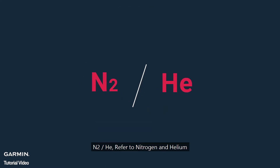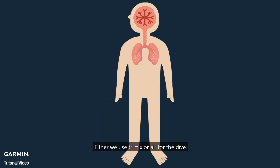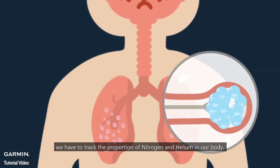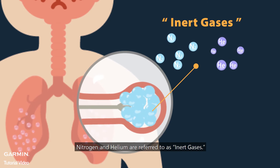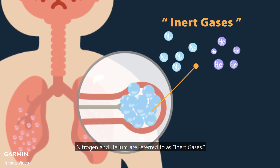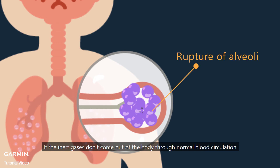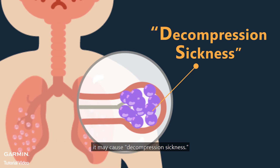N2HE refers to nitrogen and helium. Whether we use Trimix or air for the dive, we have to track the proportion of nitrogen and helium in our body. Nitrogen and helium are referred to as inert gases. If the inert gases don't come out of the body through normal blood circulation or the general air exchange mechanism in the lungs, it may cause decompression sickness.